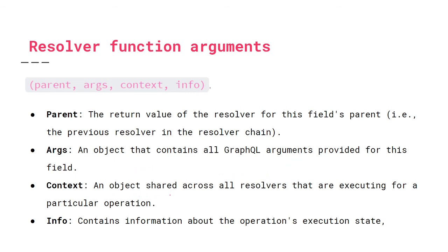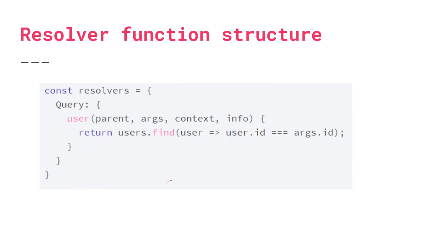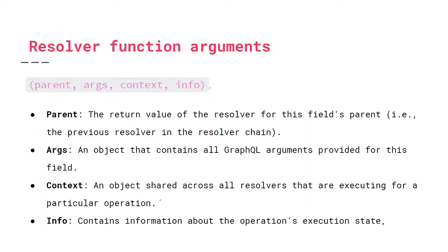Context is an object shared across all resolvers, used for executing a particular operation. In a realistic example you'd have a database connection or ORM instance like Sequelize or Mongoose in the context, so all resolvers can easily access the data source. Info is less important right now — it contains information about the operation's current execution state, such as the path to the current resolver or the resolver's name. We may discuss info in future videos.